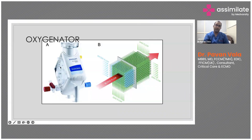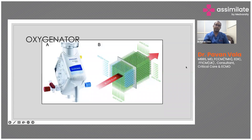The oxygenator is made of PMP — polymethyl pentene — a hollow fiber oxygenator. It looks like a dialysis cartridge but is a different material. Blood flows on one axis, gas flow on another axis, and water flow on a third axis to maintain temperature. This is what oxygenates and decarboxylates the blood.